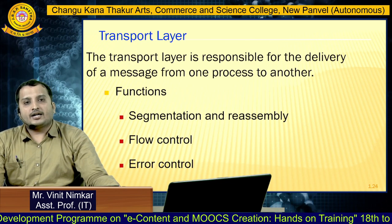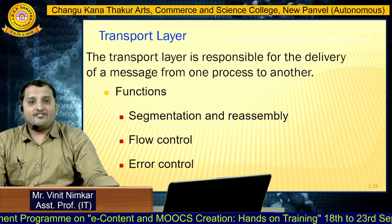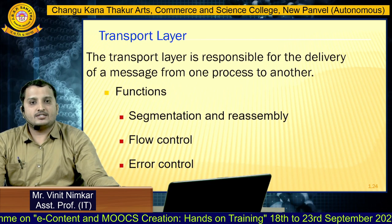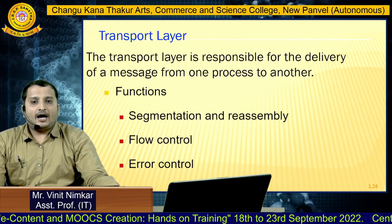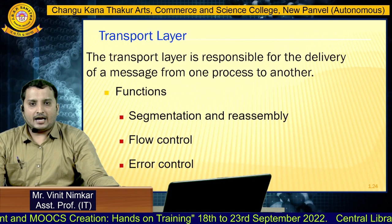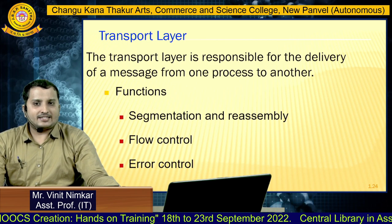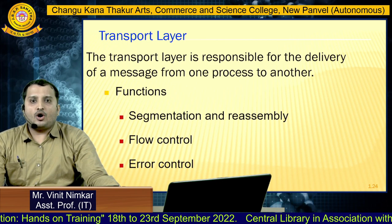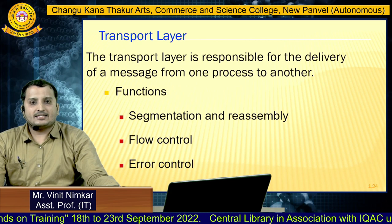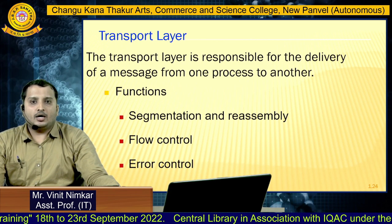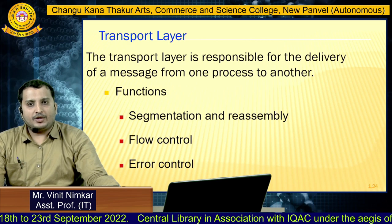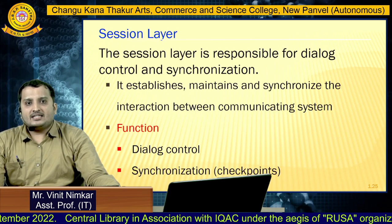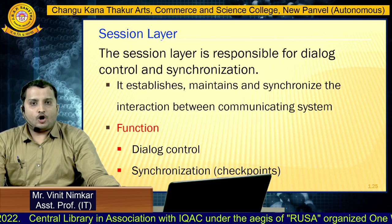The transport layer is responsible for delivery of the entire message from one process to another process. Other functions of the transport layer include segmentation and reassembly, flow control to manage the flow of data in transmission lines, and error control to handle any errors during transmission.